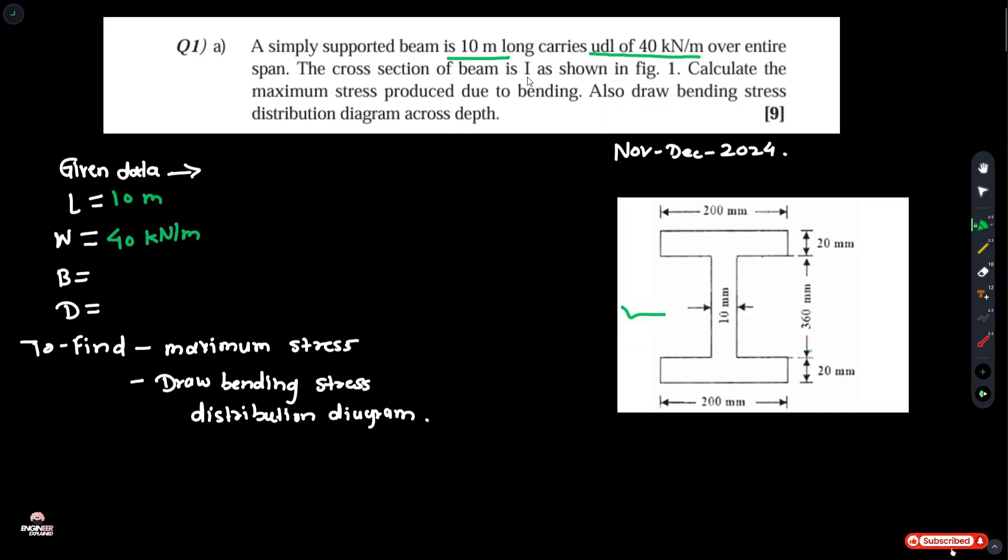The cross section of the beam is an I-section shown in the figure. Calculate the maximum shear stress produced due to bending.